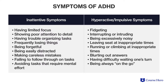Those with predominantly hyperactive or impulsive symptoms often show behavioral problems such as fidgeting, interrupting, intruding, or being excessively noisy or talkative. These behaviors might be particularly noticeable in school, where they might leave their seat at inappropriate times, or run and climb on things when they've been asked repeatedly not to. They might also blurt out answers to questions or have trouble waiting their turn.